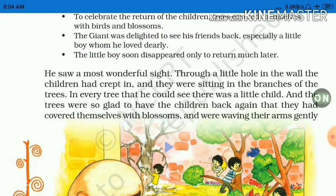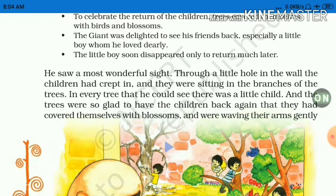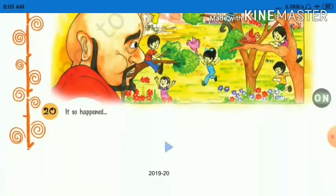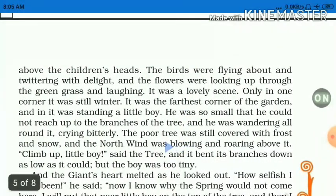In every tree that he could see there was a little child — जाइंट को सभी पेड़ पर बच्चे बैठे हुए थे। And the trees were so glad to have the children back again that they had covered themselves with blossom — पेड़ भी खुश होकर खिल गए — and the birds were waving their arms gently over the children's heads, जैसे उन्हें blessing दे रहे हों।